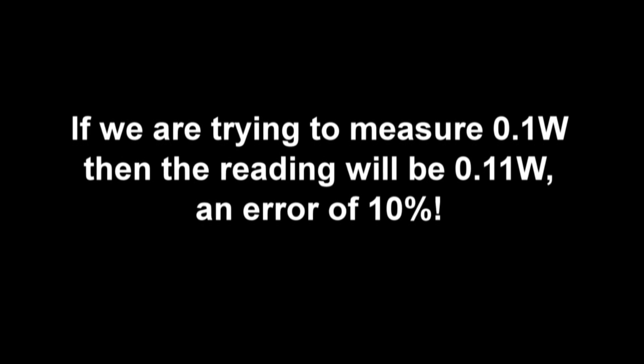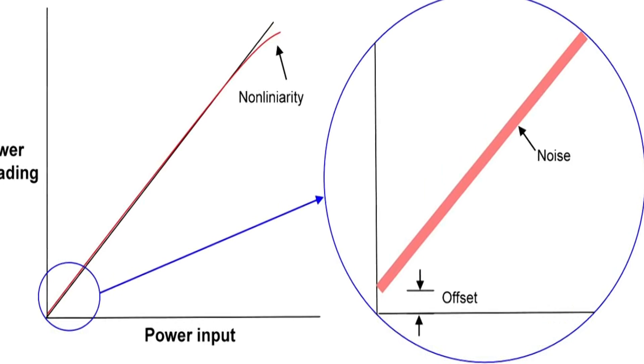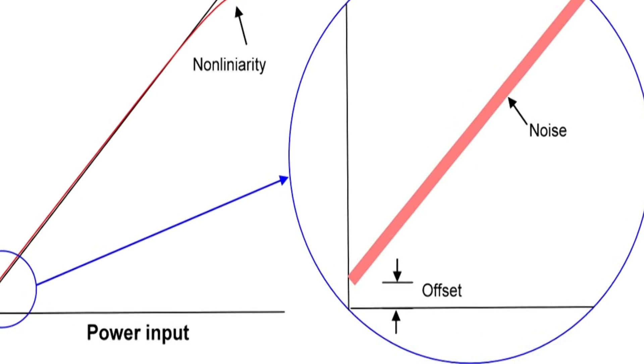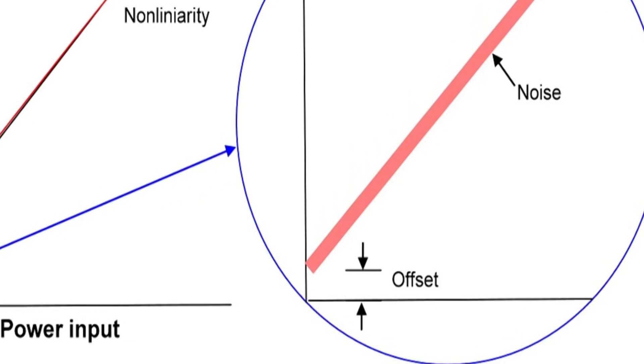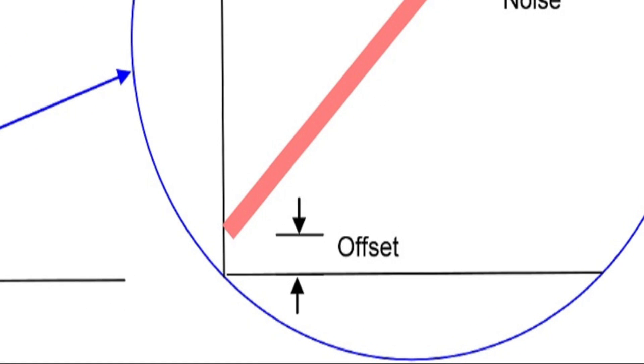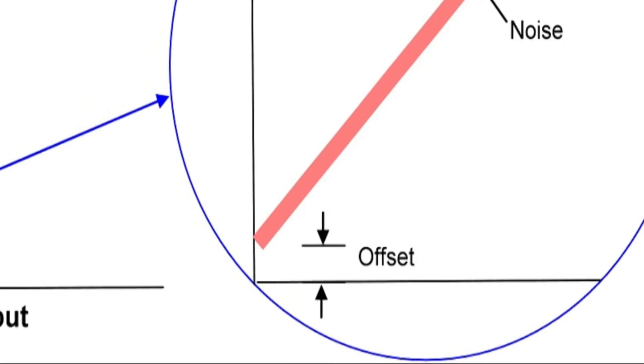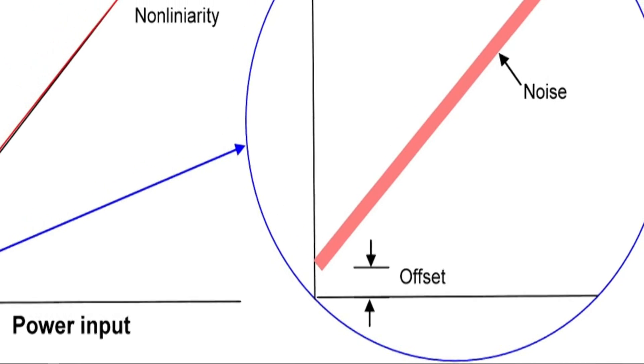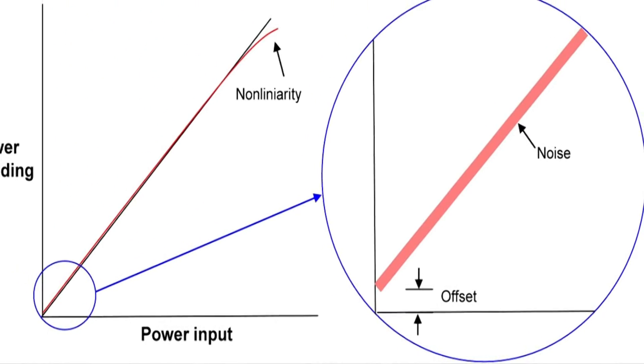We can see this in the second diagram. Here we've magnified the low power region and we're looking at it here carefully and we see an offset. Now this offset, if we're measuring a high power, the offset is negligible. But if we're measuring a very low power, the offset could become a very significant amount of the reading.